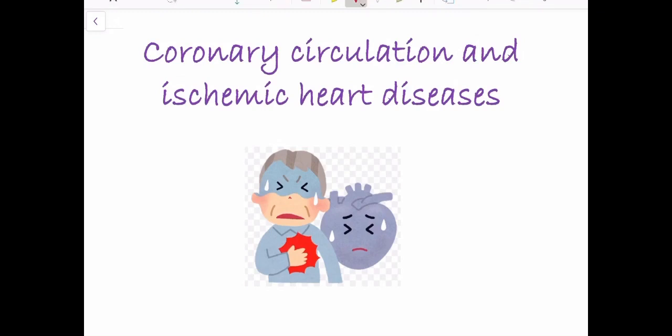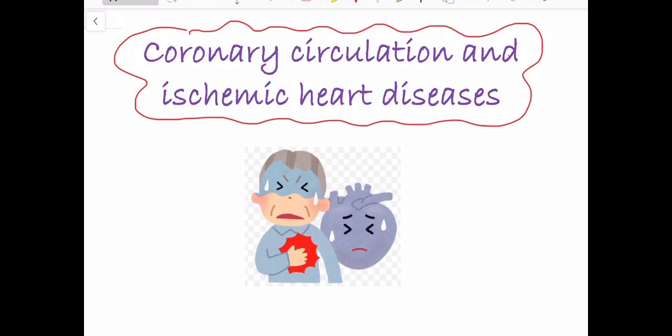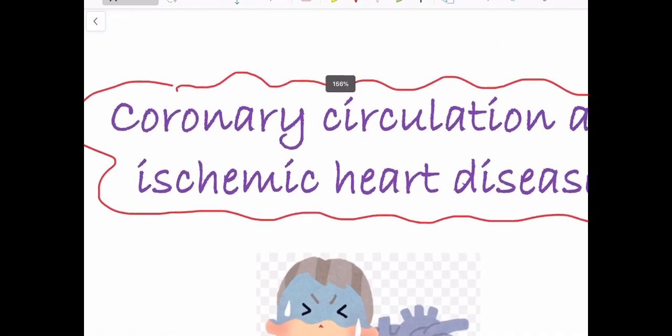As you all know, in our cardiovascular system, the main organ that pumps blood into the tissues of the body is the heart. For the action of the heart, the cardiac muscle has to contract and for that it needs to create force and energy. The heart muscle itself needs to have a good blood supply to supply oxygen and glucose to the cardiac muscle. For that, there is a separate circulatory system called coronary circulation, and today we are going to talk about that.